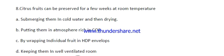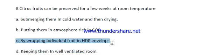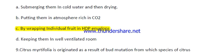Question number eight: Citrus fruit can be preserved for a long time at room temperature by which method? Options are: submerging them in cold water and drying, putting them in an atmosphere rich in carbon dioxide, wrapping individual fruit with high-density polythene, or keeping them in a well-ventilated room. The right answer is by wrapping individual fruit in high-density polythene.